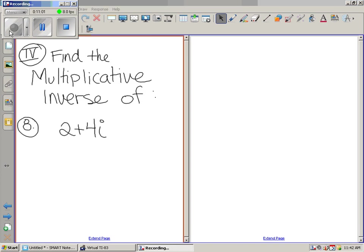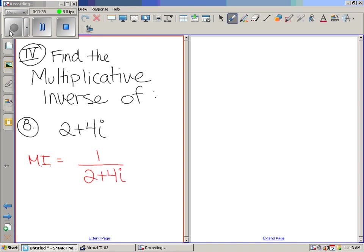Guys, we got to talk about vocab. Last part is find the multiplicative inverse. Who knows what a multiplicative inverse is? Let me give you some examples. The multiplicative inverse of two is a half. The multiplicative inverse of five is what? Is one fifth. The multiplicative inverse of ten is what? One over ten. The multiplicative inverse of twenty is what? So let me show you something. Straight off the bat, the multiplicative inverse of two plus four I is what? Now, what's the rule? Can't have I in the denominator.